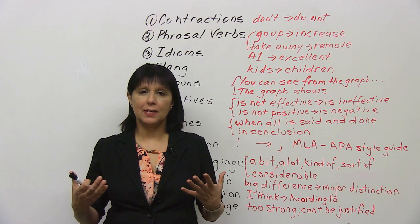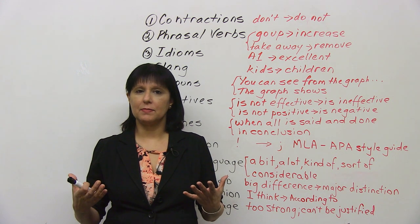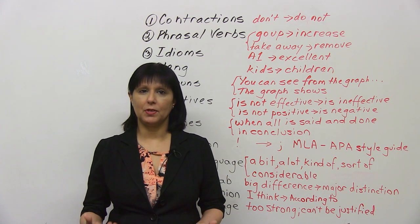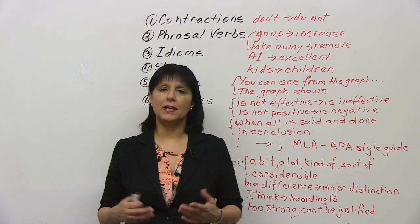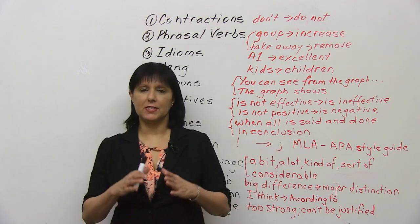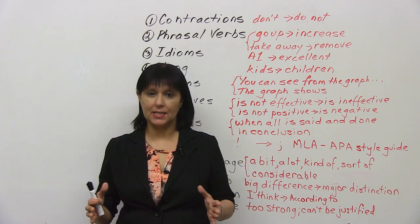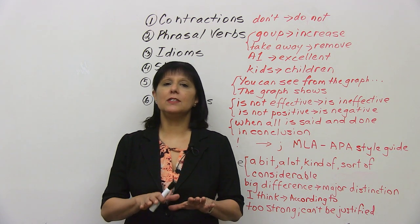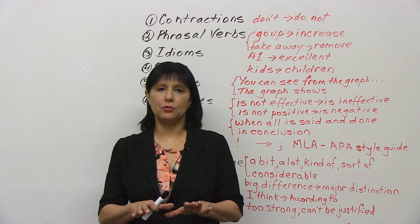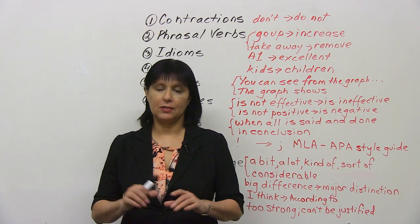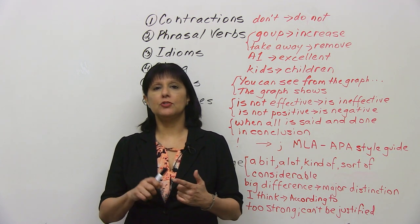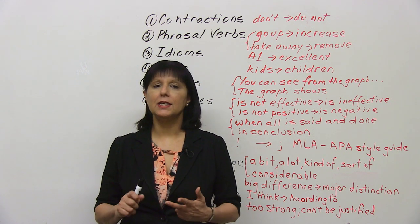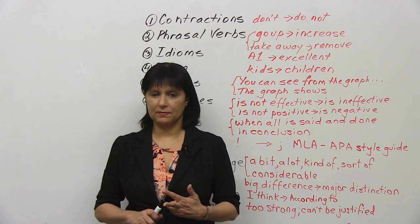You can't claim to write something and claim it as your own. If you do that, that's called plagiarism — it's a very serious offense in academic circles. But today, we're not going to talk about how to reference a source. We're going to talk about how to write more formally and objectively.